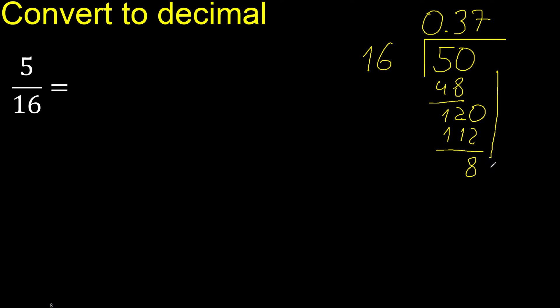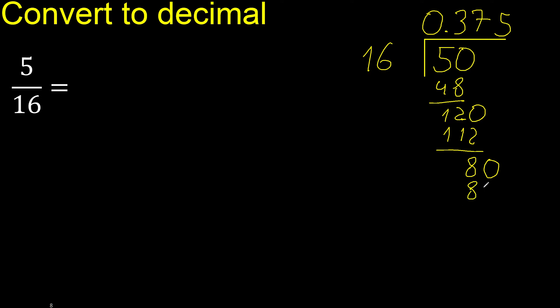There is no number, therefore complete with 0. 16 multiplied by which number? Multiplied by 5 is 80. Subtract 0 — therefore finish.